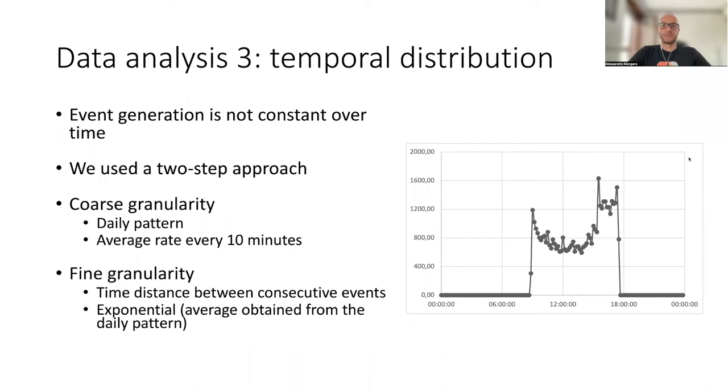Third aspect that we derived from our analysis is the temporal distribution of events. Event generation is not constant over time and follows trends that are both at a coarse and at a fine granularity level. So we use a two-step approach to capture both. At a coarse granularity, we derive a typical daily pattern with the average rate computed every 10 minutes on the data set, and you can see the pattern on the right of the slide. So there is an opening time and the closing time, there are zero events before the opening and after the closing, and then there is a certain trend.